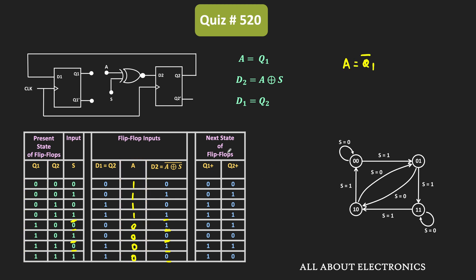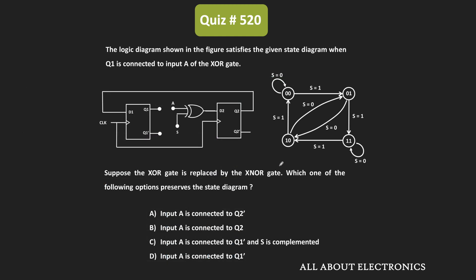So we can say that when Q1̄ is connected to the A input of the XNOR gate, the circuit diagram will preserve the given state diagram. Therefore, when the XOR gate is replaced by the XNOR gate, the A input should be connected to Q1̄. For the given question, option D is the correct answer.